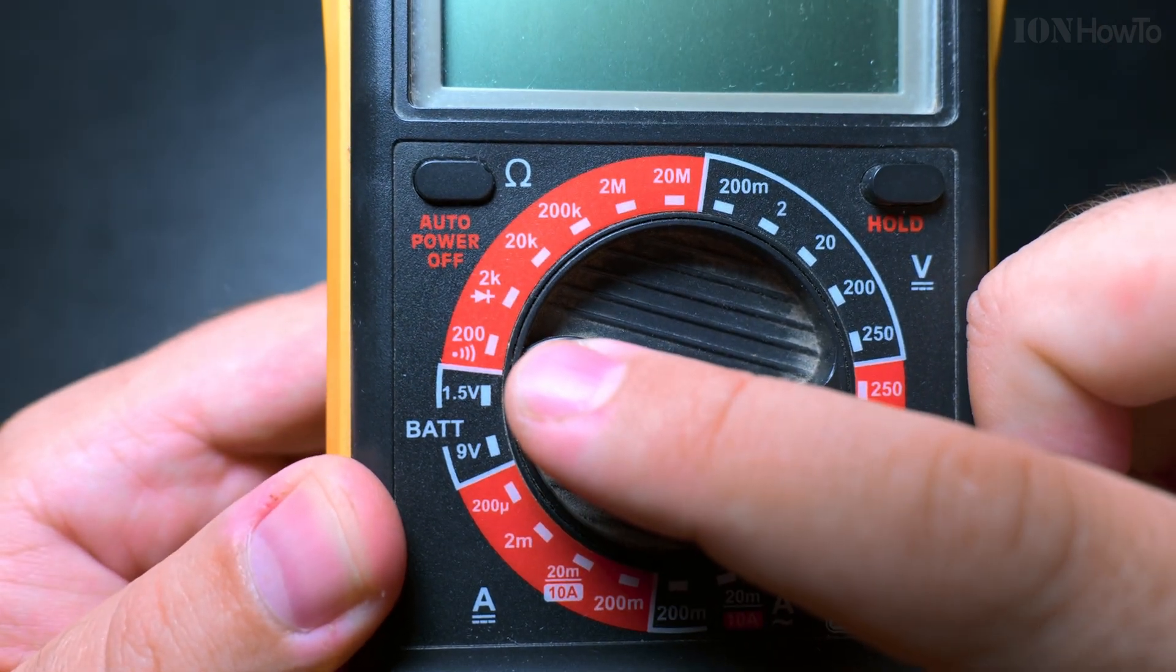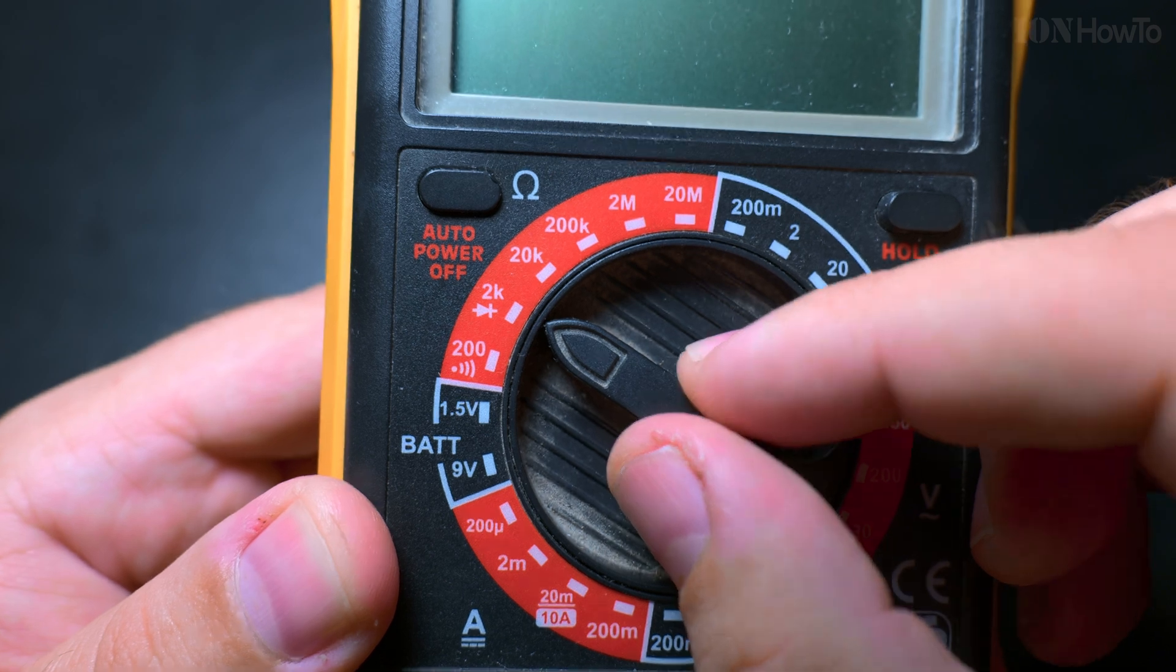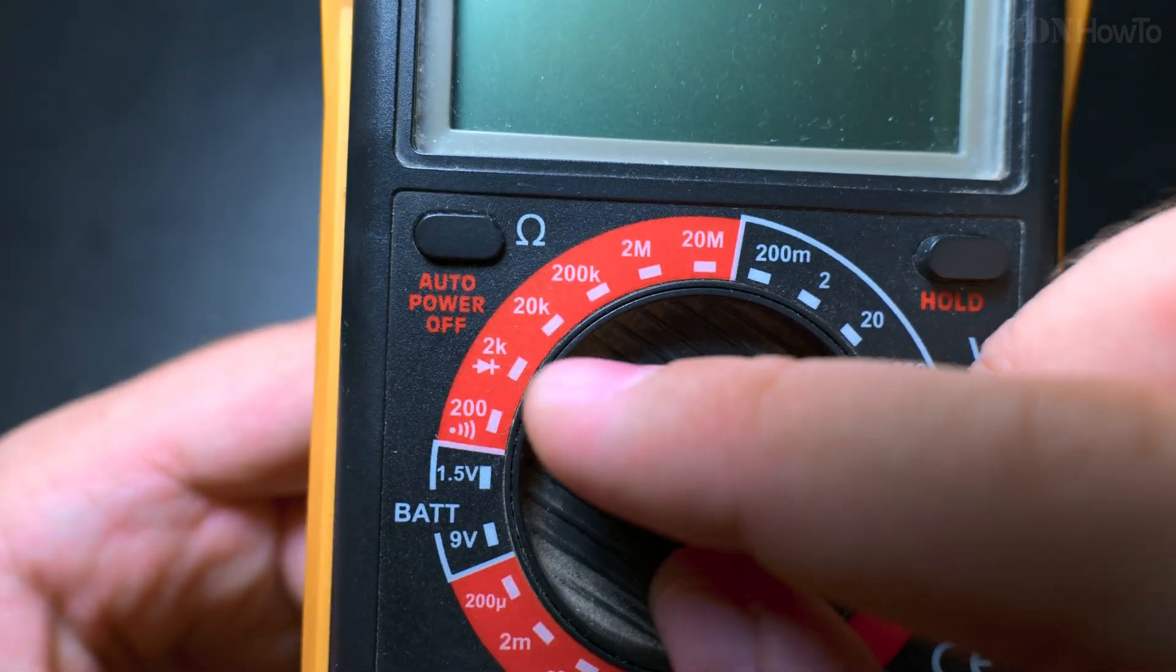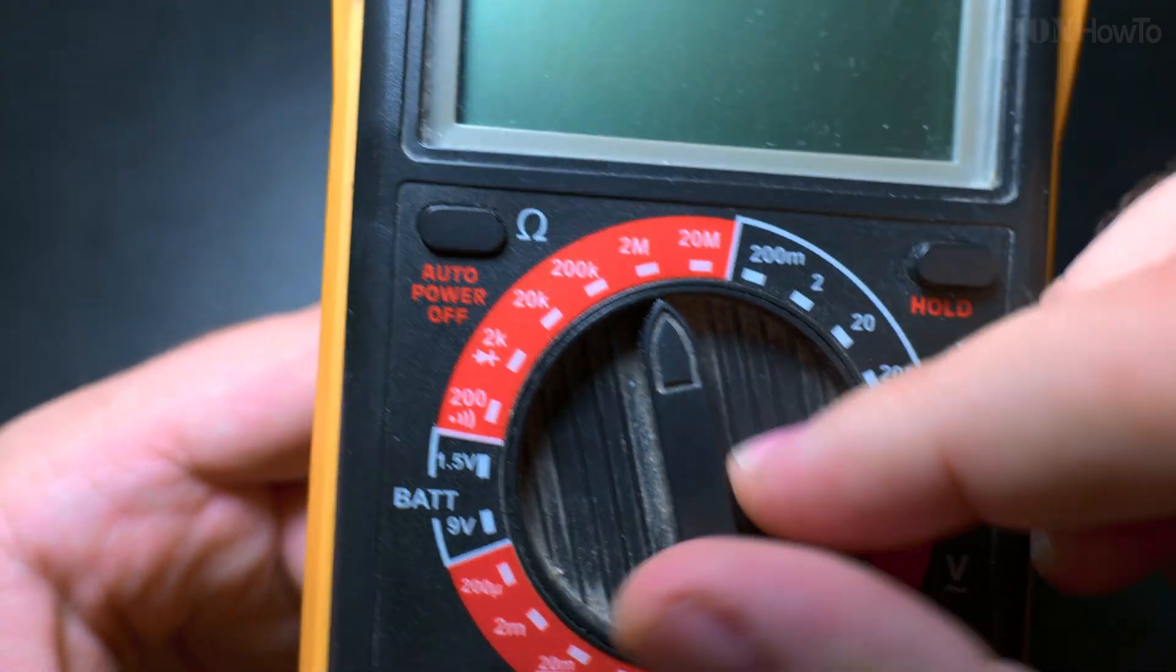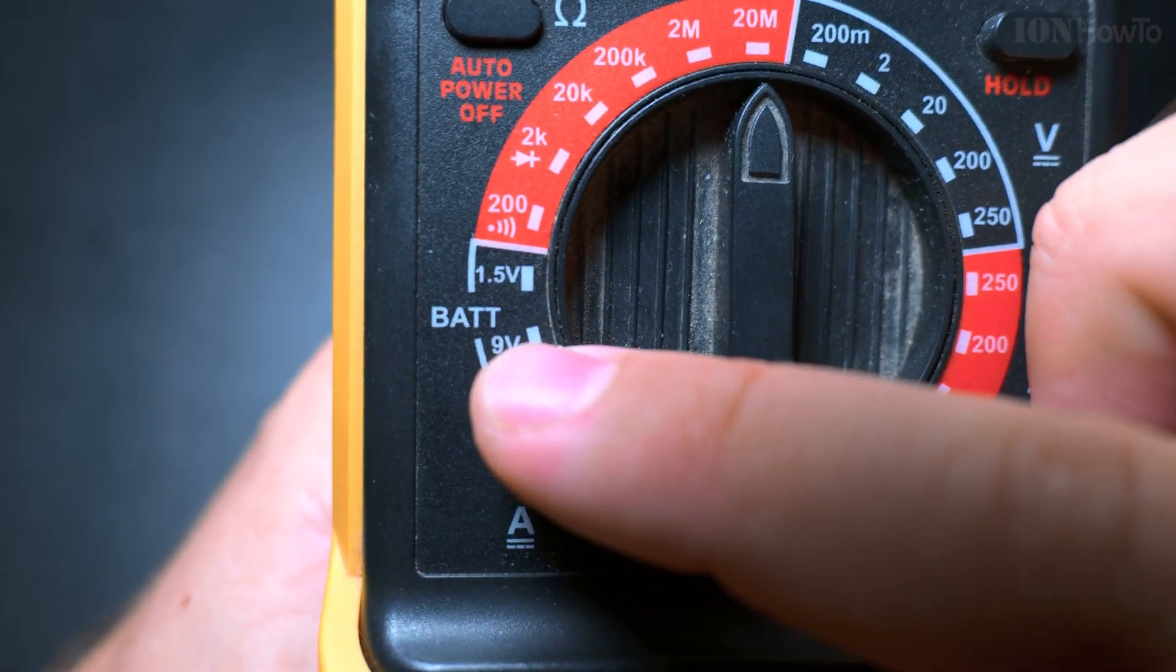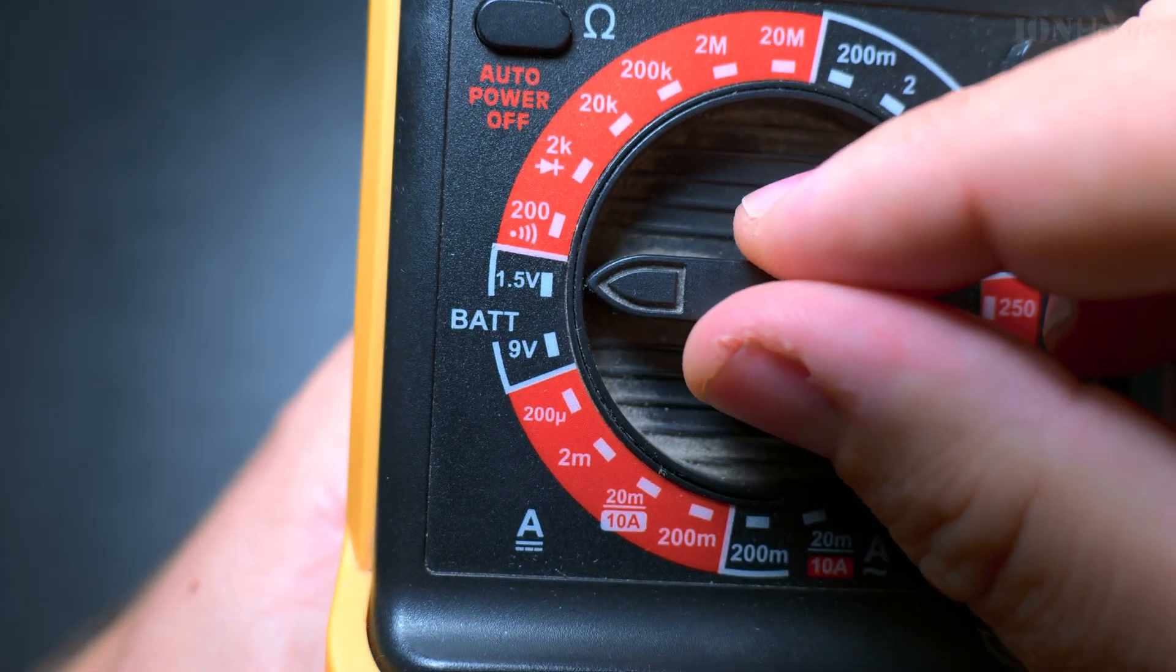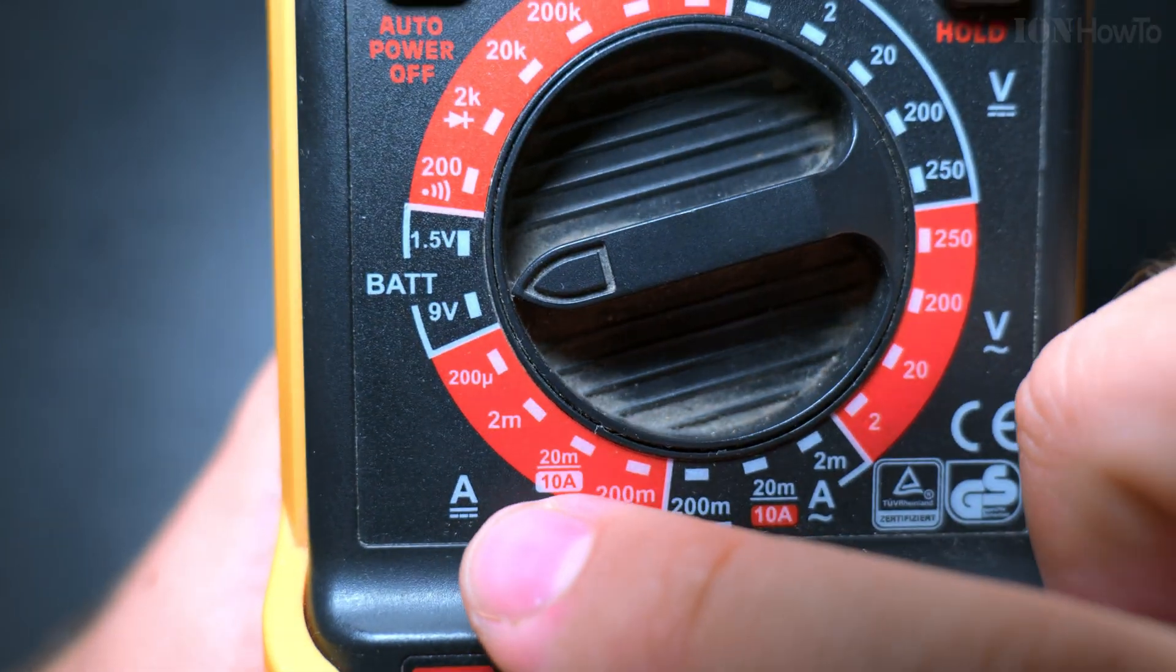The most important function in a digital multimeter is the continuity function, and then the diode function to check if the diode is working properly, allowing current to flow one way and stopping it the other way. Checking the resistance basically, and also the battery check.